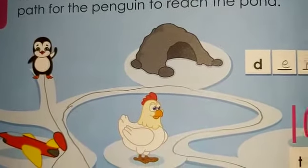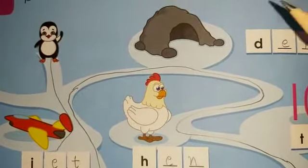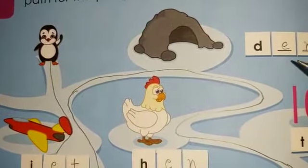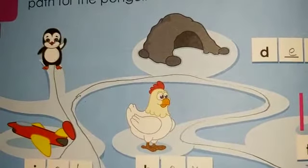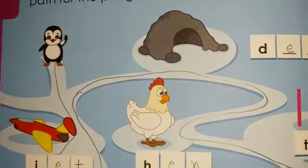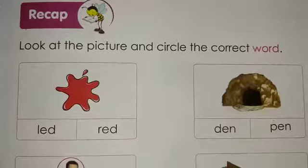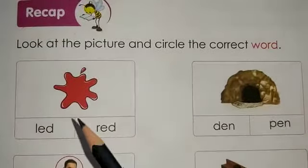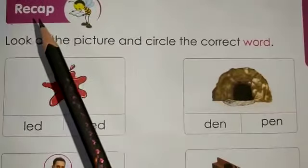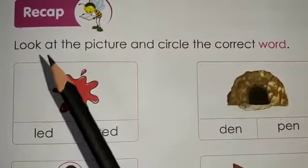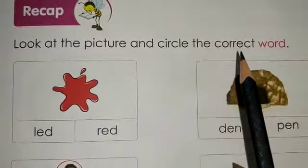I hope this fun exercise is clear to you. Please do it in the same way in your books — book number 3, page number 14. After we have done this, please move on to the next page, which is page number 15. On page number 15, you have been given an exercise: look at the picture and circle the correct word.